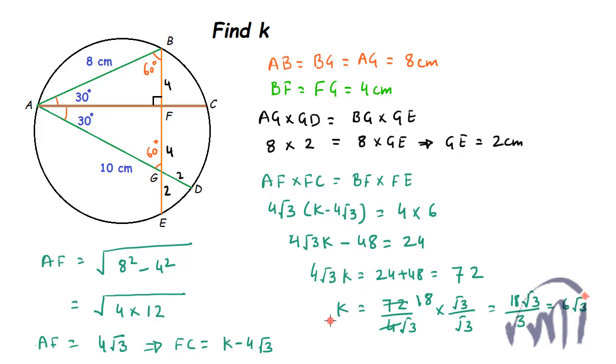This will be 18 root of 3 divided by 3 and this will be equal to 6 root of 3. So we have found the value of K, K will be equal to 6 root of 3.